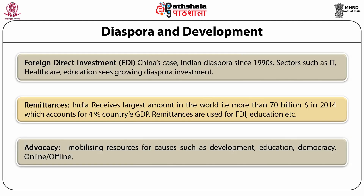Advocacy is another area where diaspora plays a very constructive role, and sometimes also a negative role, but it is a major area of engagement in recent years. Advocacy can be in terms of development, education, literacy, and democracy. It can be done through online and offline means — through blogs, Facebook, online campaigns — or through direct involvement, coming back to the country and participating. Advocacy can also be found in election campaigning, raising awareness, and mobilizing funds for good causes.